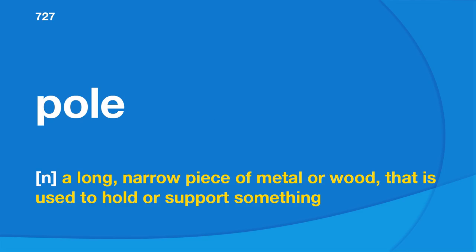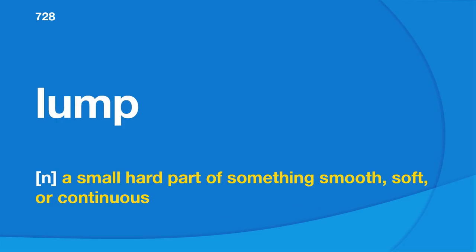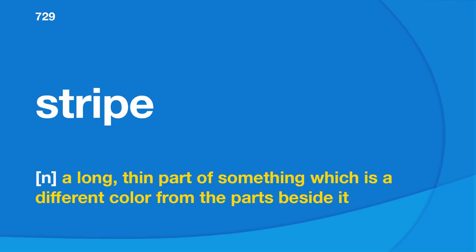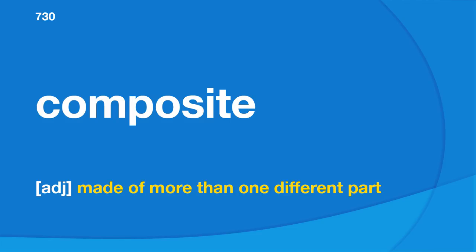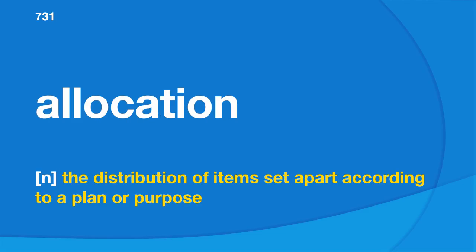Elaborate: to be made or done with great care or with much detail. Acceleration: increase in the speed or rate of something. Discharge: to release someone or something. Pole: a long, narrow piece of metal or wood that is used to hold or support something. Lump: a small, hard part of something smooth, soft, or continuous. Stripe: a long, thin part of something which is a different color from the parts beside it. Composite: made of more than one different part.